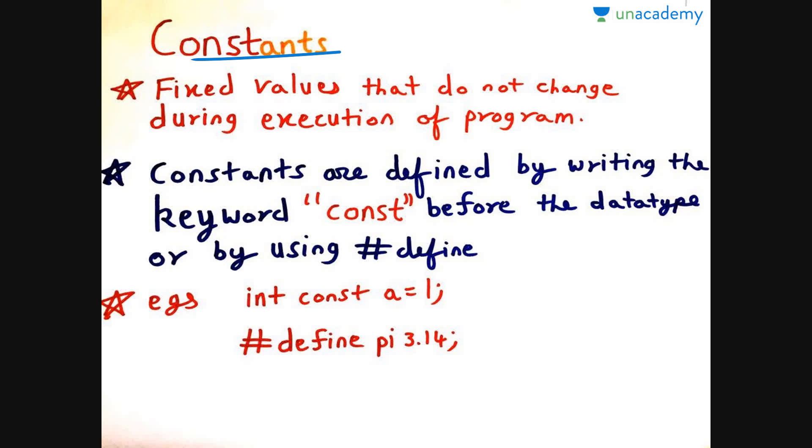So we have to use the term const before the data type or by using hash define to declare a variable as constant, means it will not change the value throughout the program. The example is const int a = 1. So in this case, the value of a will remain one throughout the program.